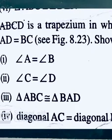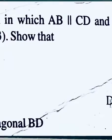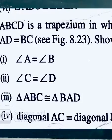Question number 12. ABCD is a trapezium in which AB parallel CD and AD equal BC. Show that angle A equal angle B, second angle C equal angle D, third triangle ABC congruent triangle BAD, fourth diagonal AC equal diagonal BD.